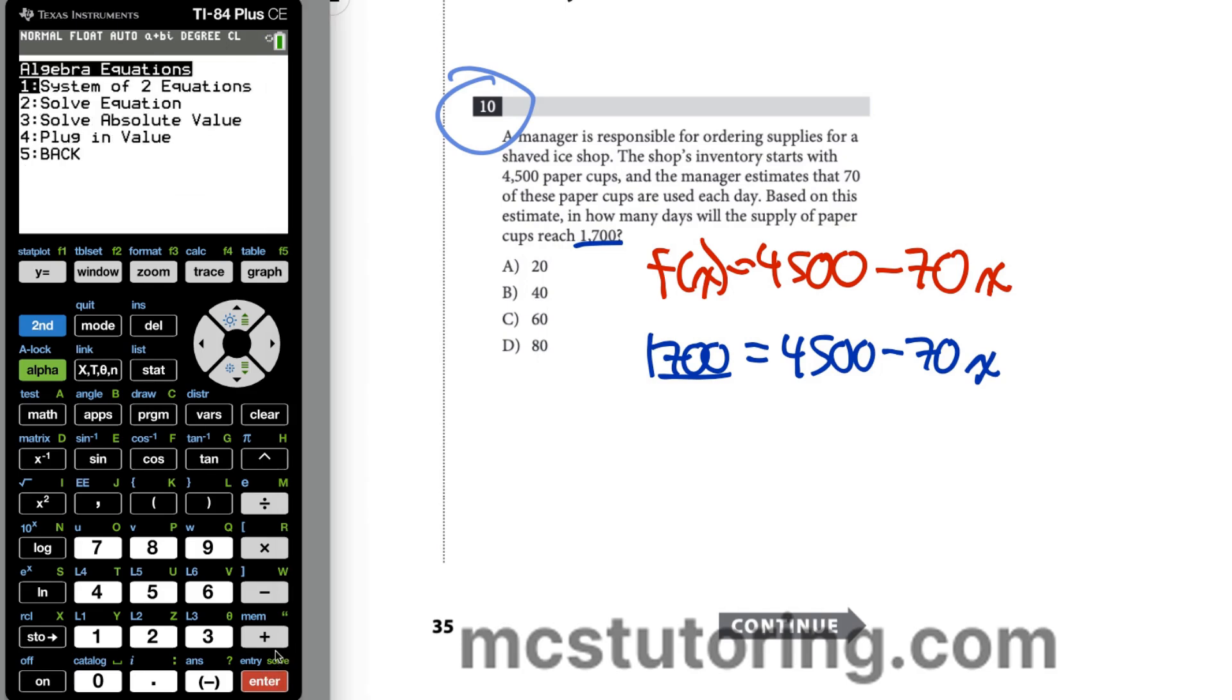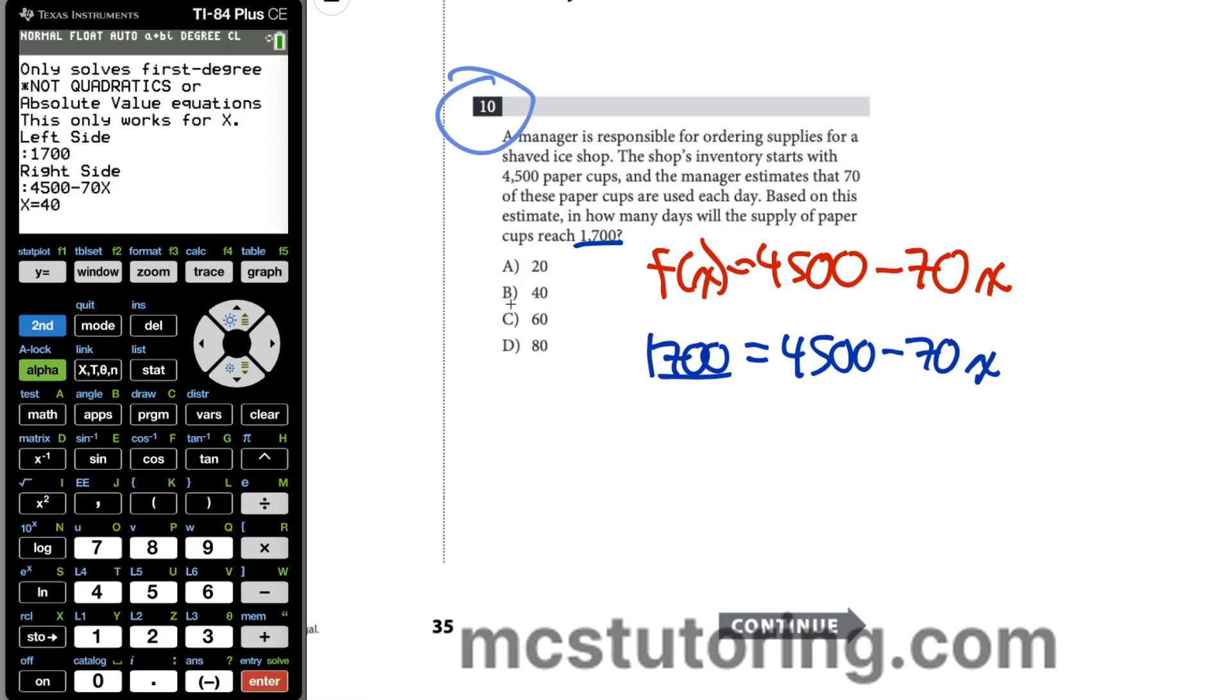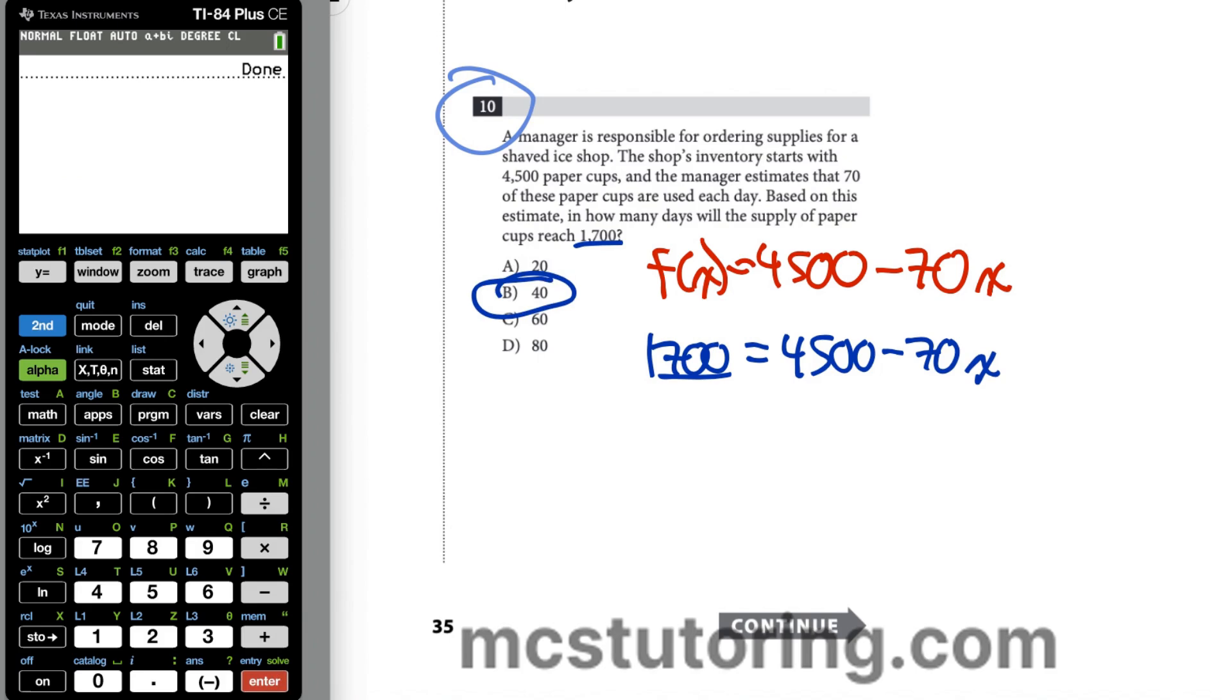We're going to go to algebra equations, and then solve an equation. The left side will be 1,700, that's how many cups we have left. Then the right side would be 4,500 minus 70X. X equals 40. Everybody's happy. Glad that worked out so well.